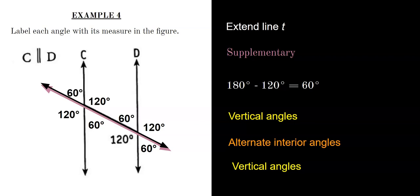There are many definitions you can use to solve these problems — there is not just one way. In most cases, you extend line T if it's not already there, then apply the supplementary rule, then vertical angles. From there, you can use alternate interior angles, alternate exterior angles, or corresponding angles to finish off the remaining lines.